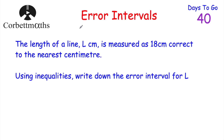Today we're going to look at error intervals. So we've got our first question. It says the length of a line, L centimetres, is measured as 18 centimetres correct to the nearest centimetre. So whenever this line is measured, it's 18 centimetres to the nearest centimetre — whenever it's rounded, it's 18 centimetres. And we've been asked to use inequality notation to write down the error interval for L.